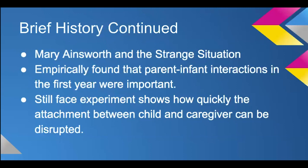In secure attachment, the child is not comforted by the stranger, becomes very distressed when the mother leaves, and is comforted when the mother returns. In anxious attachment, the child is anxious before the mother leaves and very difficult to console on return. In avoidant attachment, the child turns away from the mother when she returns — not comforted by her return — and may ignore her, look away, turn their back, or even hit. These are the situations we see with avoidant-resistant children.